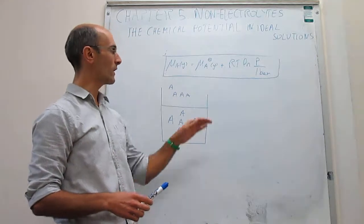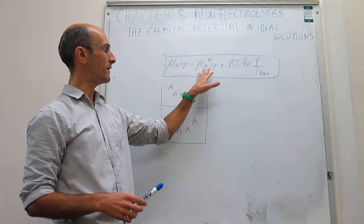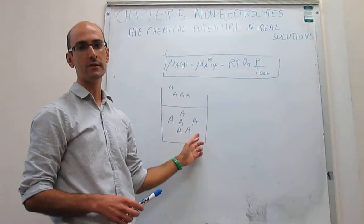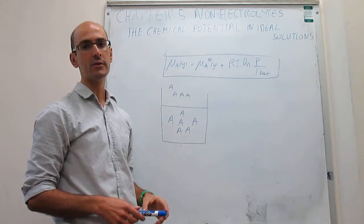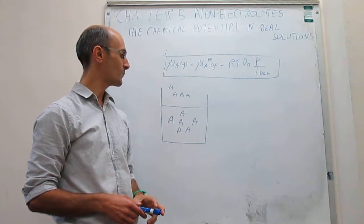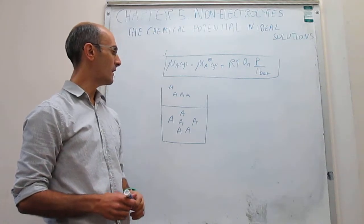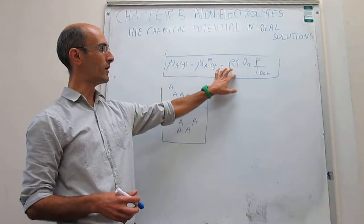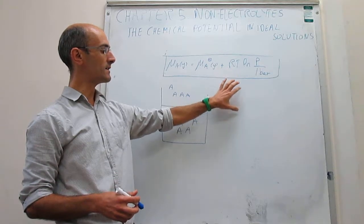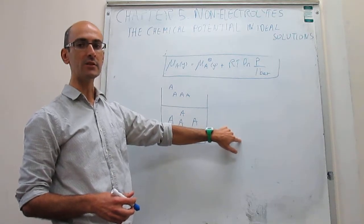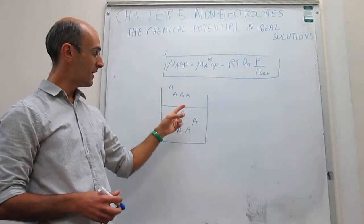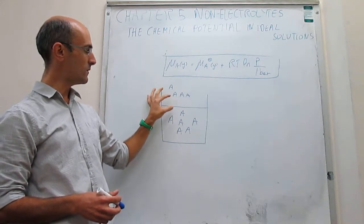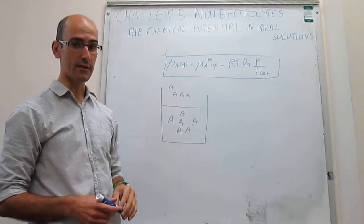Our question is how we can write an expression like the one for gases, but for a solute or a solvent in the solution phase. The way we're going to do this is by trying to mirror the chemical potential of the gas to the chemical potential of the liquid, by seeing how these two phases are related.